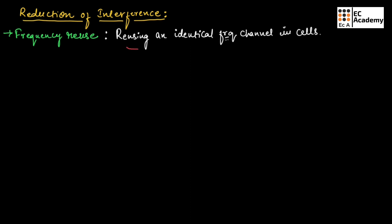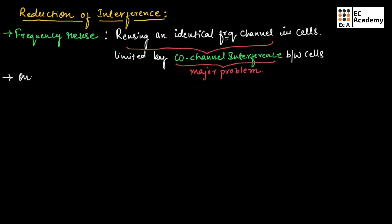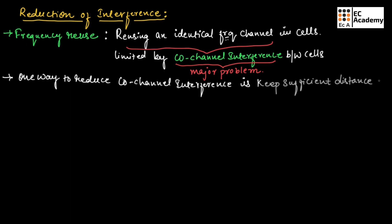Reusing an identical frequency channel is limited by co-channel interference between the cells. This co-channel interference is a major problem for frequency reuse. One way to reduce co-channel interference is to keep sufficient distance between two co-channel cells.